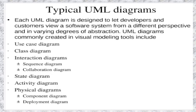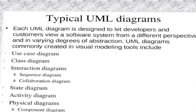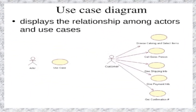Typical UML diagrams are as follows: we have the use case diagram, class diagram, interaction diagrams, and so forth. But we will focus only on the use case diagram. These are the symbols we will use in a use case diagram — we use an oval for the use case, and a stickman for the actor.